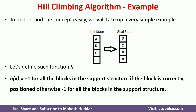Here I will consider the initial state where we have four blocks: A, B, C, D, placed in a certain configuration, and this is the goal state. We have to move from this initial state to the goal state. We are given a heuristic function h(x): plus one for each block in the support structure placed correctly with respect to the goal state, and minus one if it is not placed correctly.